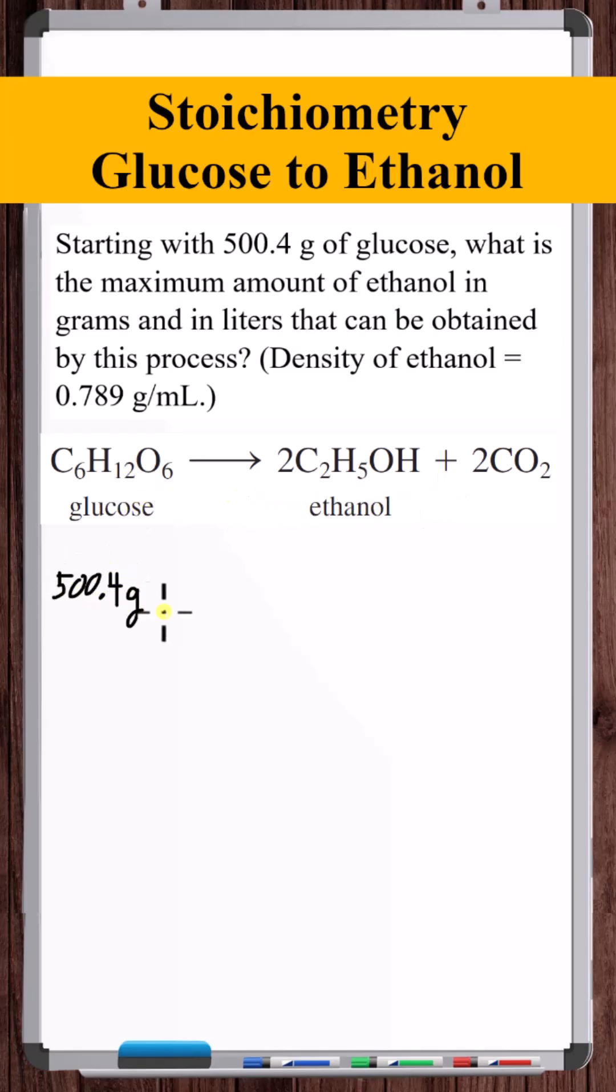So we start with 500.4 grams of glucose. The molar mass of glucose is 180.156 grams per mole, so we can use that to convert this 500.4 grams to moles.